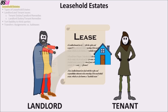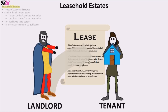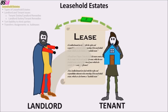The landlord is the present owner of the property and the tenant is the possessor of the property. The tenant has a present interest in a leasehold estate and the landlord has a future interest in the leasehold estate. The payment made from the tenant to the landlord is called rent.